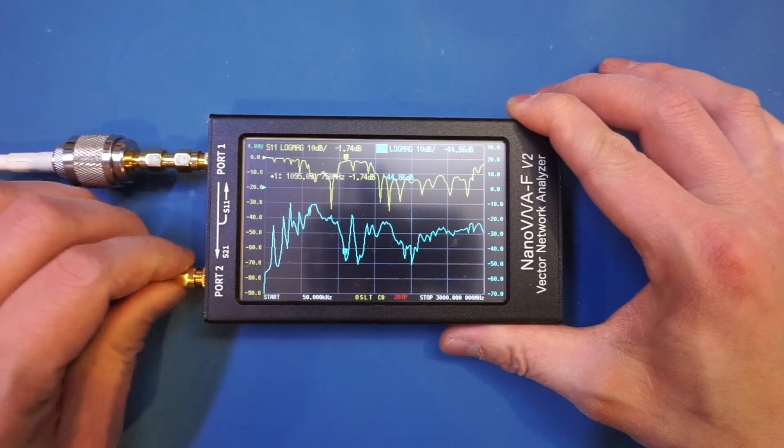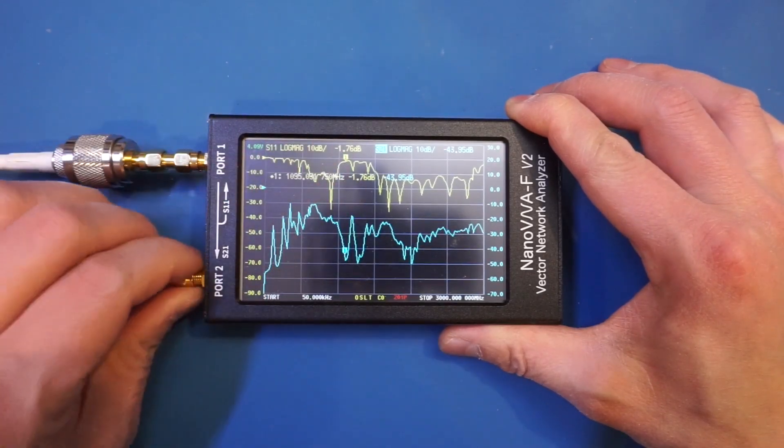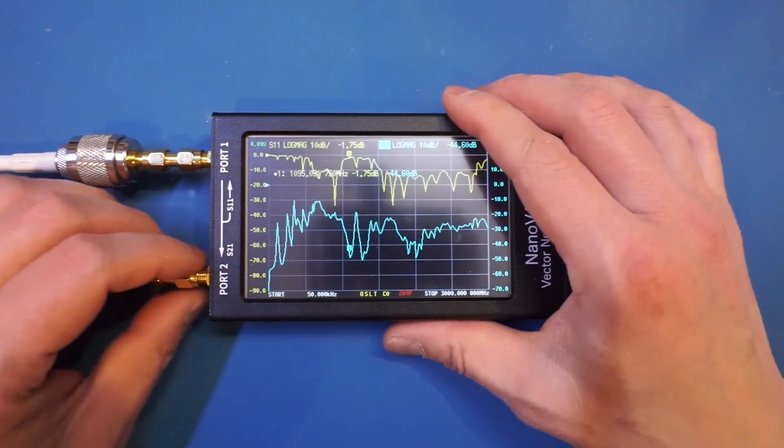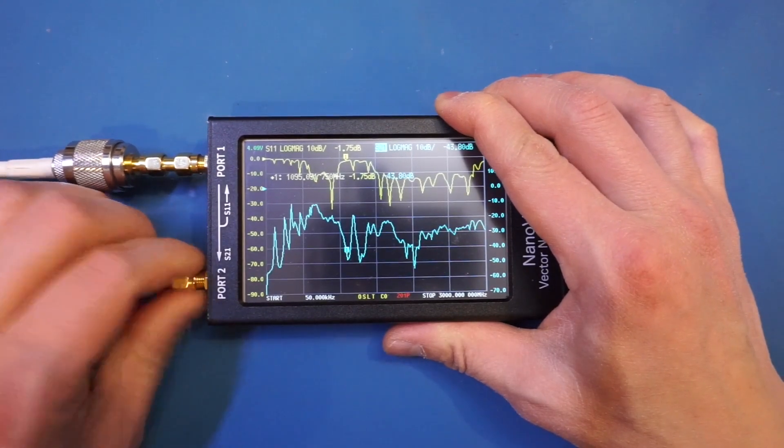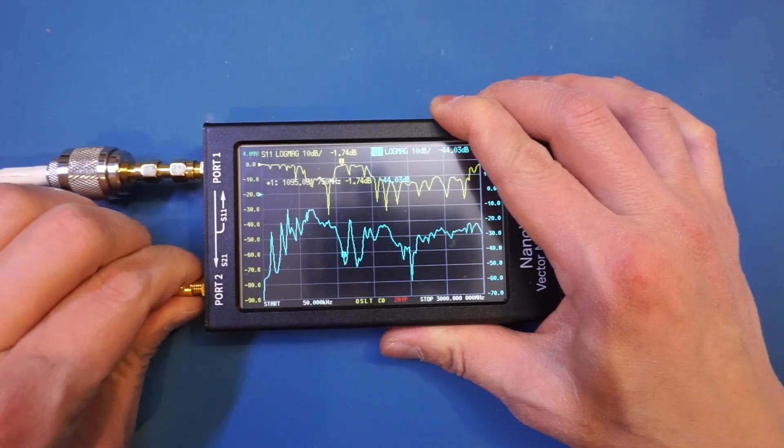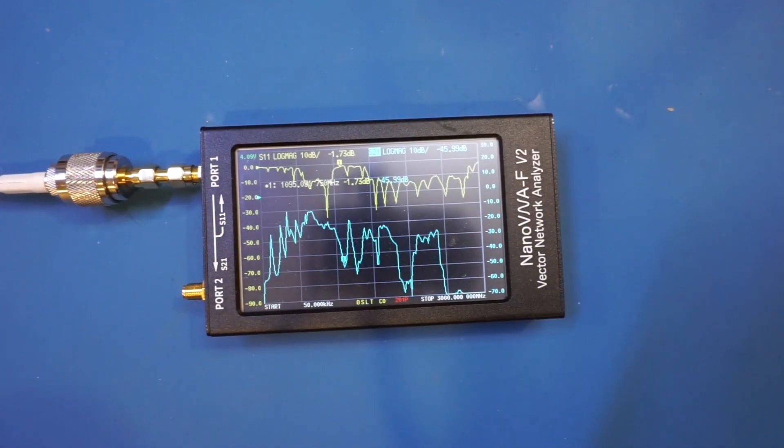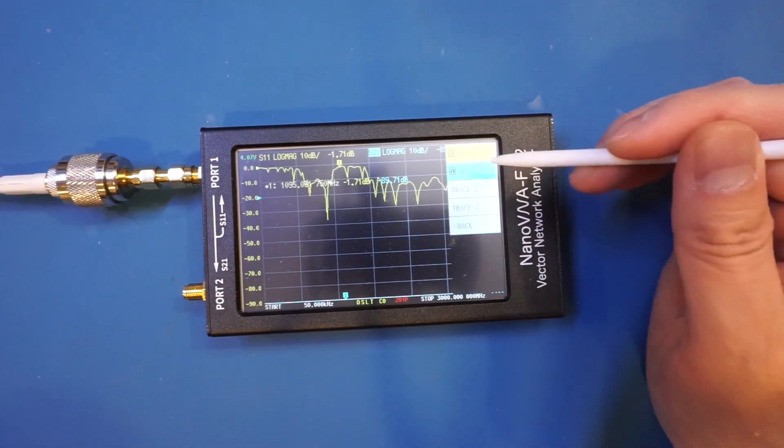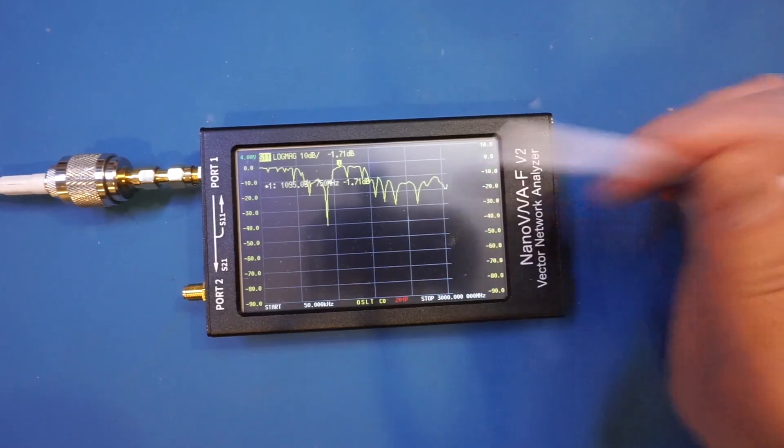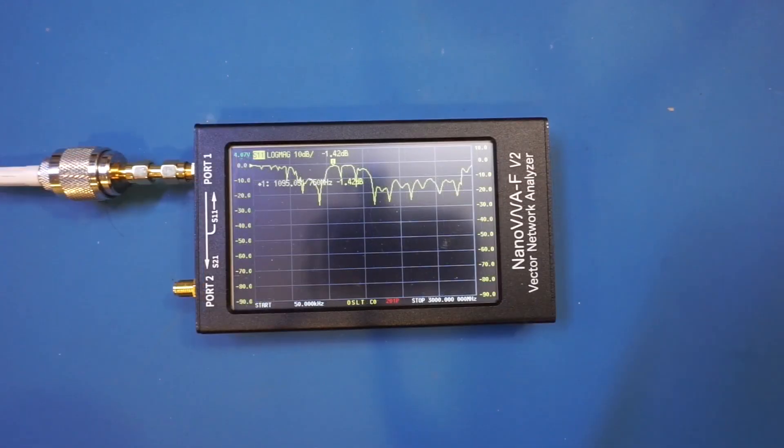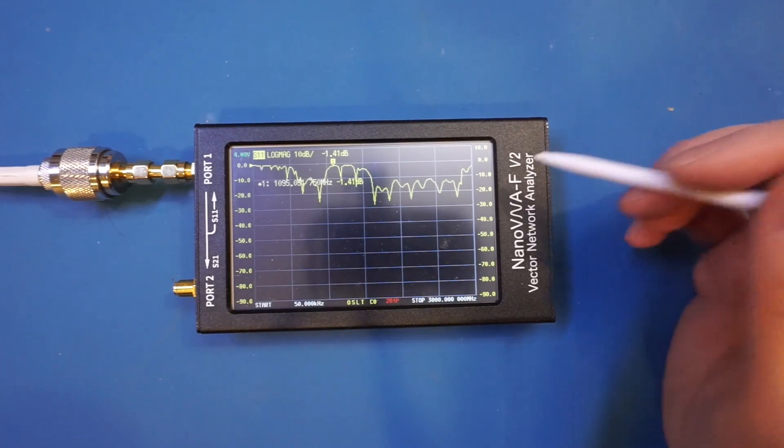So what I'm going to do next is to reduce the frequency to each of the frequency bands that antenna operates on and take a closer look. So let me remove the second set of antenna first as we don't need the S21 measurement anymore. So let me actually turn off the S21 measurement.